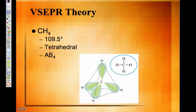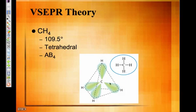So CH4 — here's the Lewis structure. How many atoms are bonded to the central atom? Four. And how many lone pairs — or unshared pairs? Zero. So you'd look for four and zero, and on your chart that should say tetrahedral is the shape. That's how we're getting those shapes.